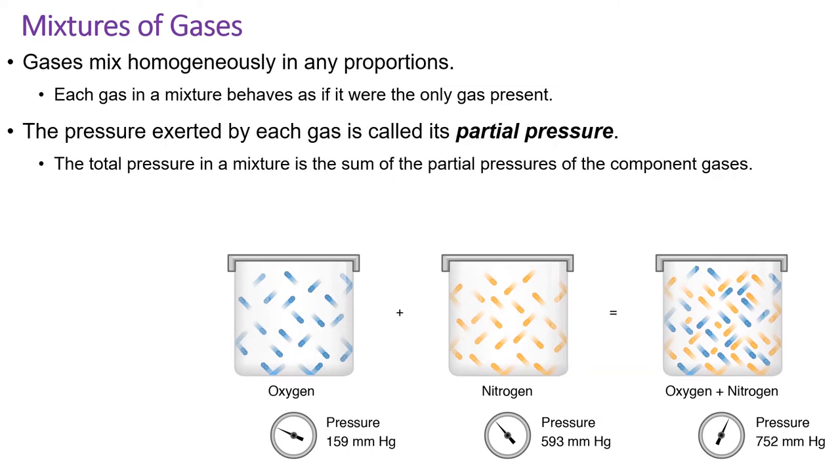The pressure of an individual gas in a mixture is called that gas's partial pressure. If we add up all the partial pressures of each gas in a mixture, we get the total pressure inside the container.